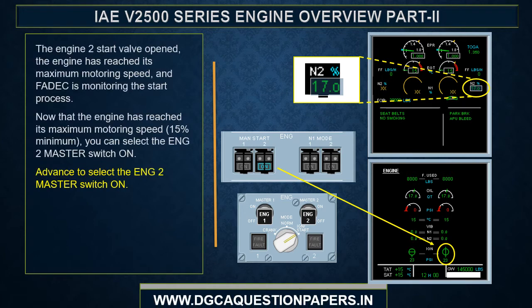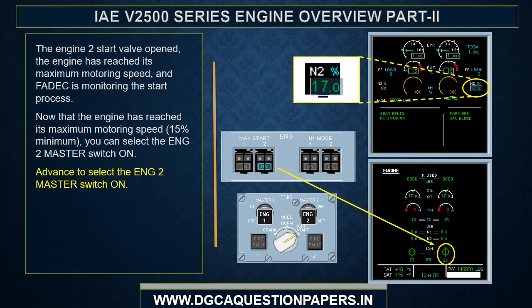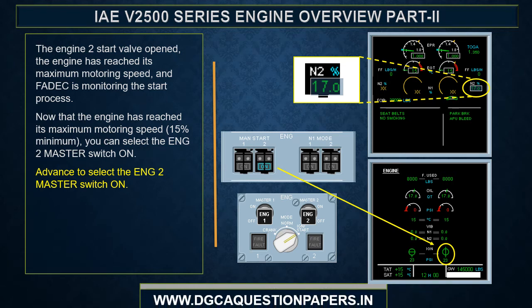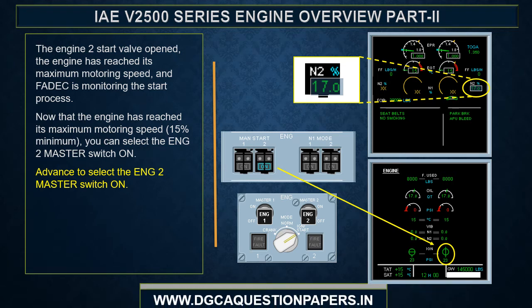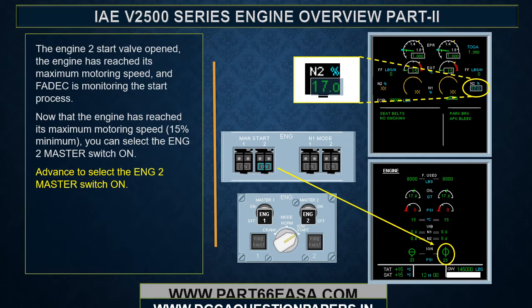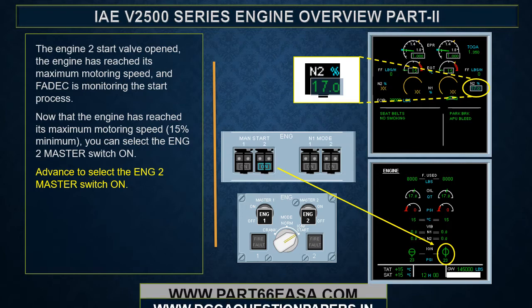The engine 2 start valve opened. The engine has reached its maximum motoring speed and FADEC is monitoring the start process. Now that the engine has reached maximum motoring speed — 15% minimum — you can select engine 2 master switch on.